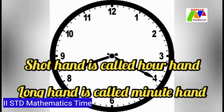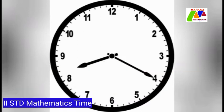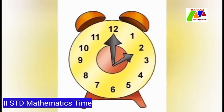One hand is the short hand and the other hand is the long hand. The short hand is also called the hour hand. It moves slowly. It shows the hour.